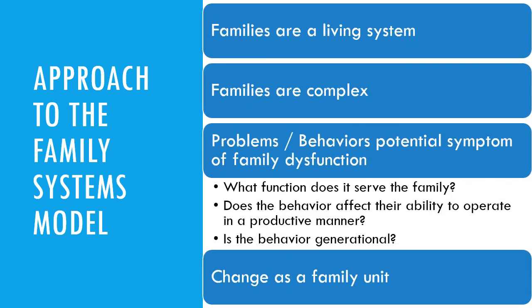The Family Systems Model takes the approach that: 1. People make up families and families are living systems. 2. Families are complex and you cannot truly understand a person unless you consider them in the context of that larger system. 3. Problems and behaviors may be a symptom of family dysfunction, assuming the problematic behavior serves a function for the family. The behavior is maintained by family processes and may have been learned from previous generations.